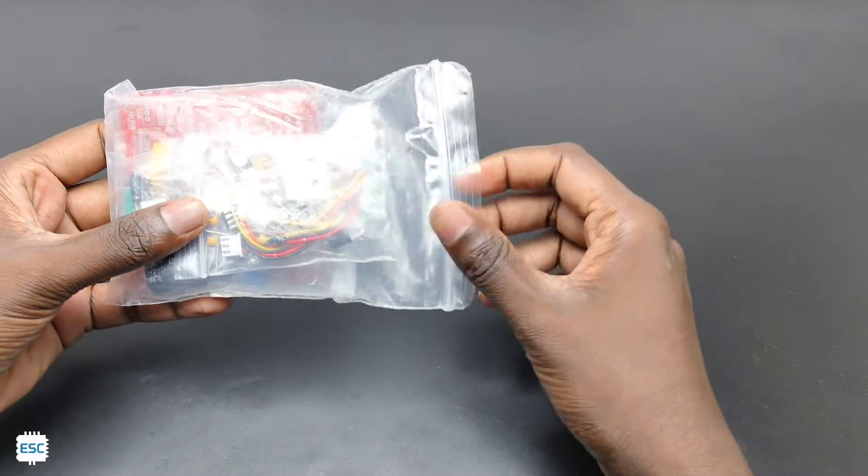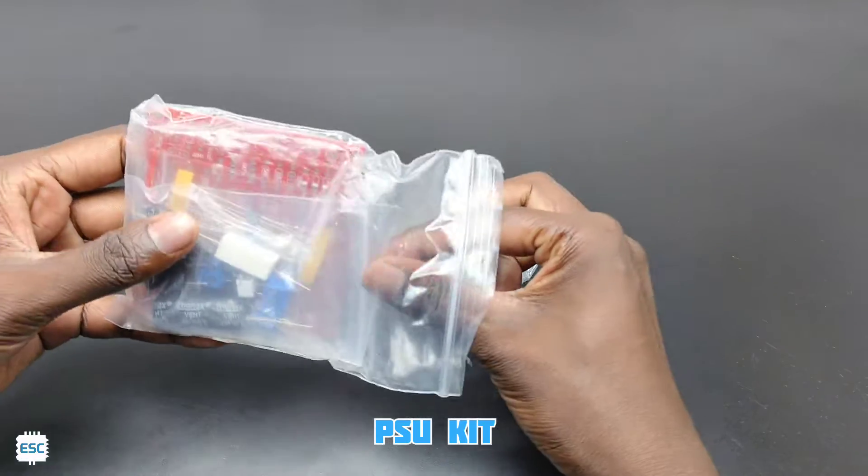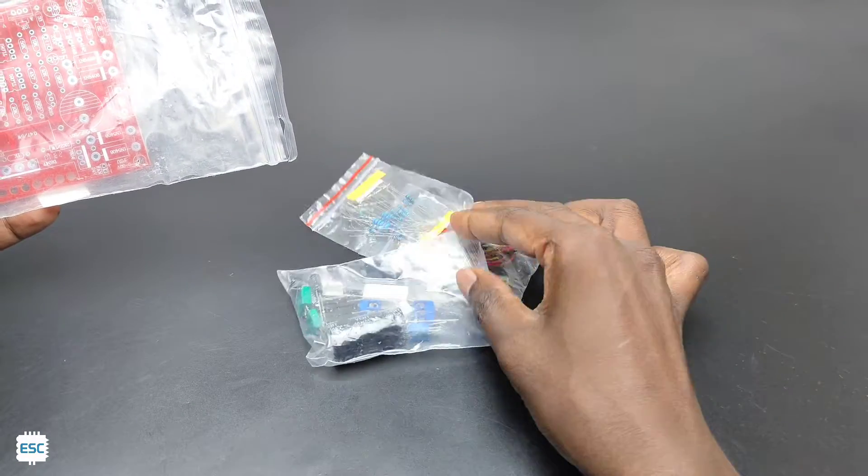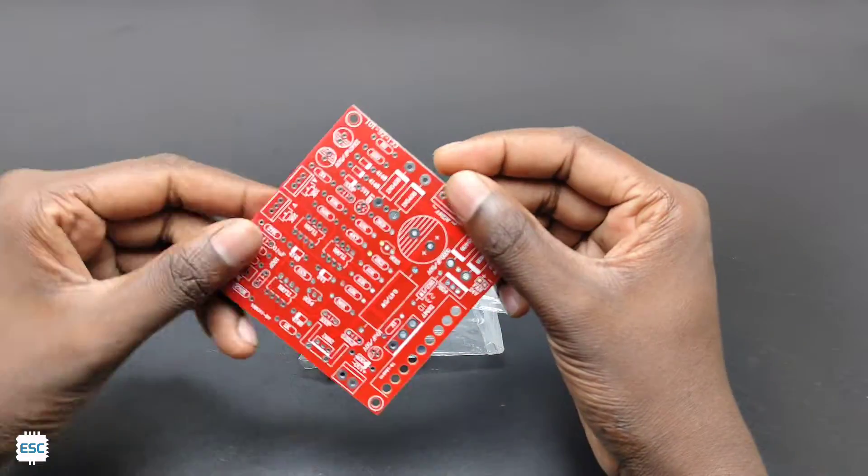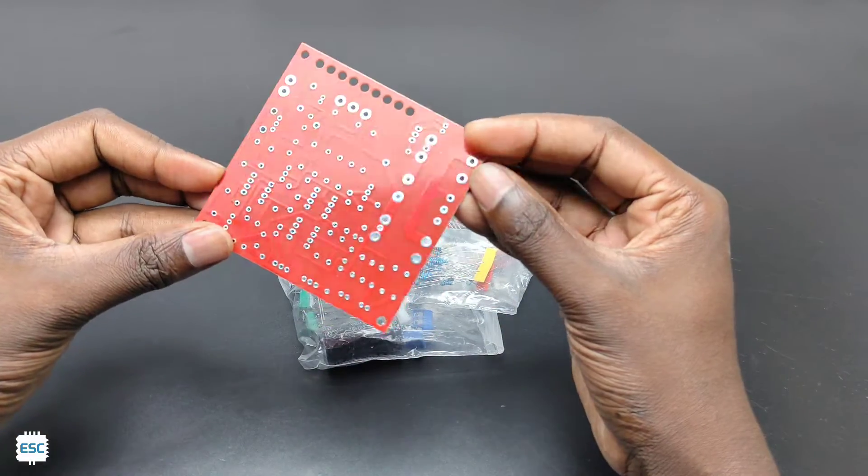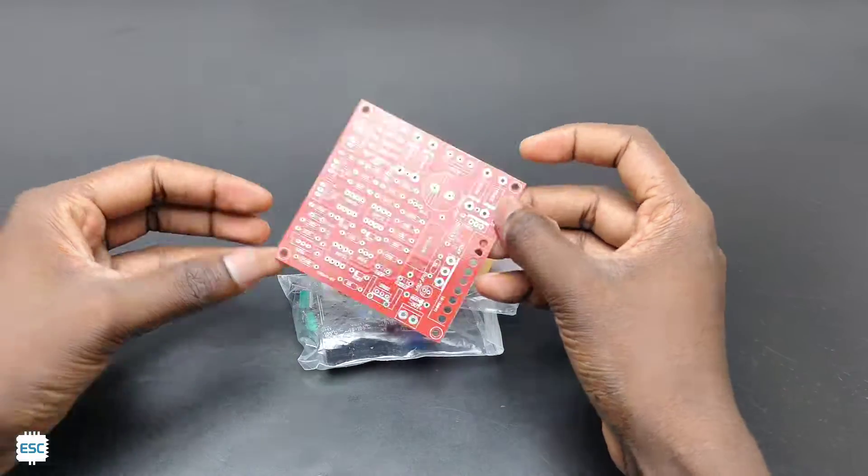The main part of this supply unit is this kit. This is a 2SD1047 transistor based power supply kit. You will get all components along with the PCB. Also, you can buy the assembled version. You can find the purchase link from my video description.